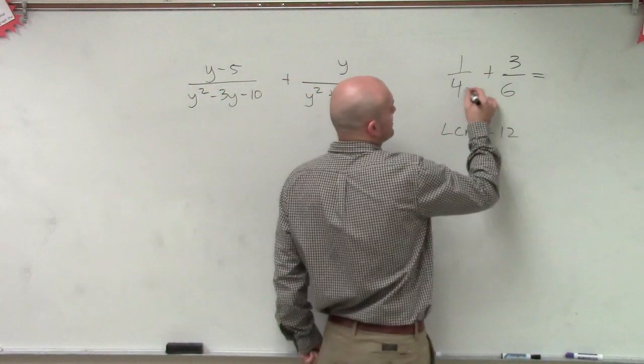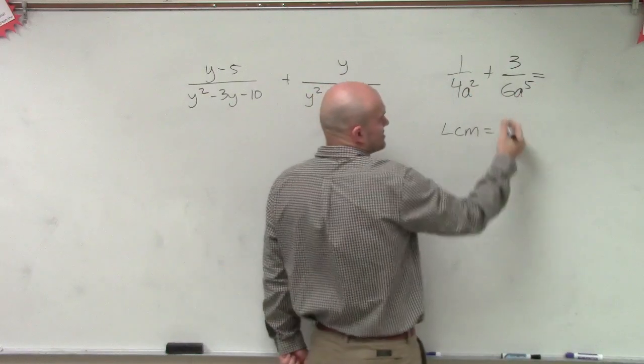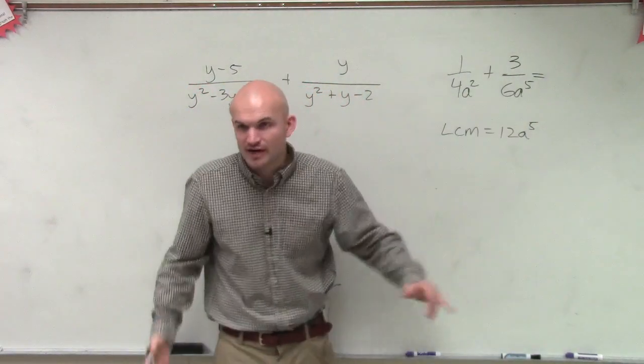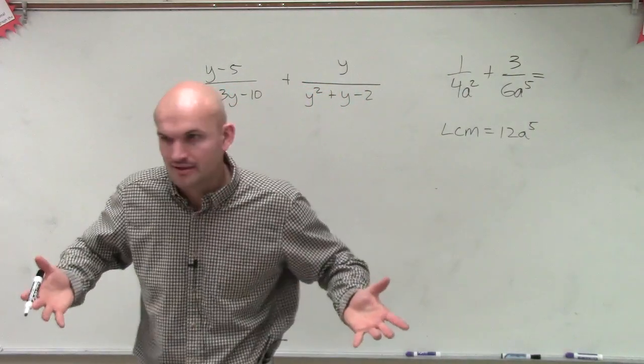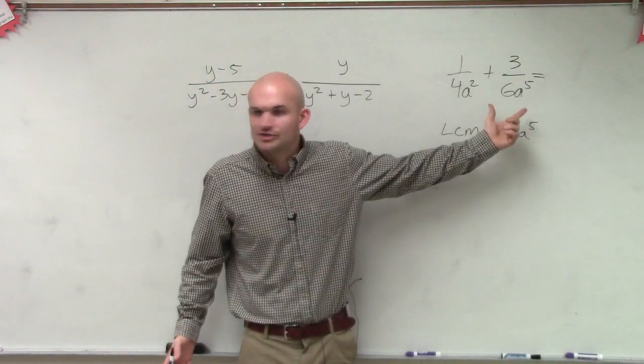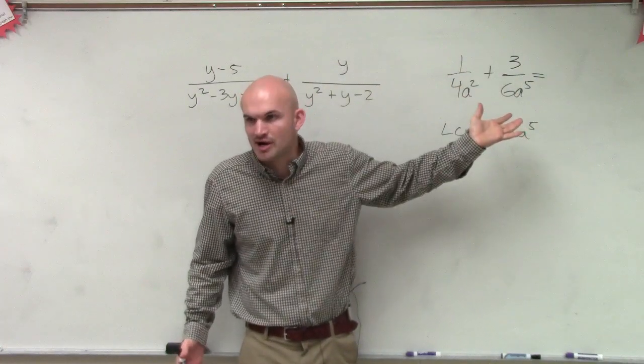And even when we added a squared and a to the fifth, the LCM is a to the fifth. It's pretty basic when you just have numbers and variables that are multiplied by each other. You just take what is the largest number that you multiply to get your numbers. That's part of your LCM. And what is the largest exponent? And that's part of your LCM.